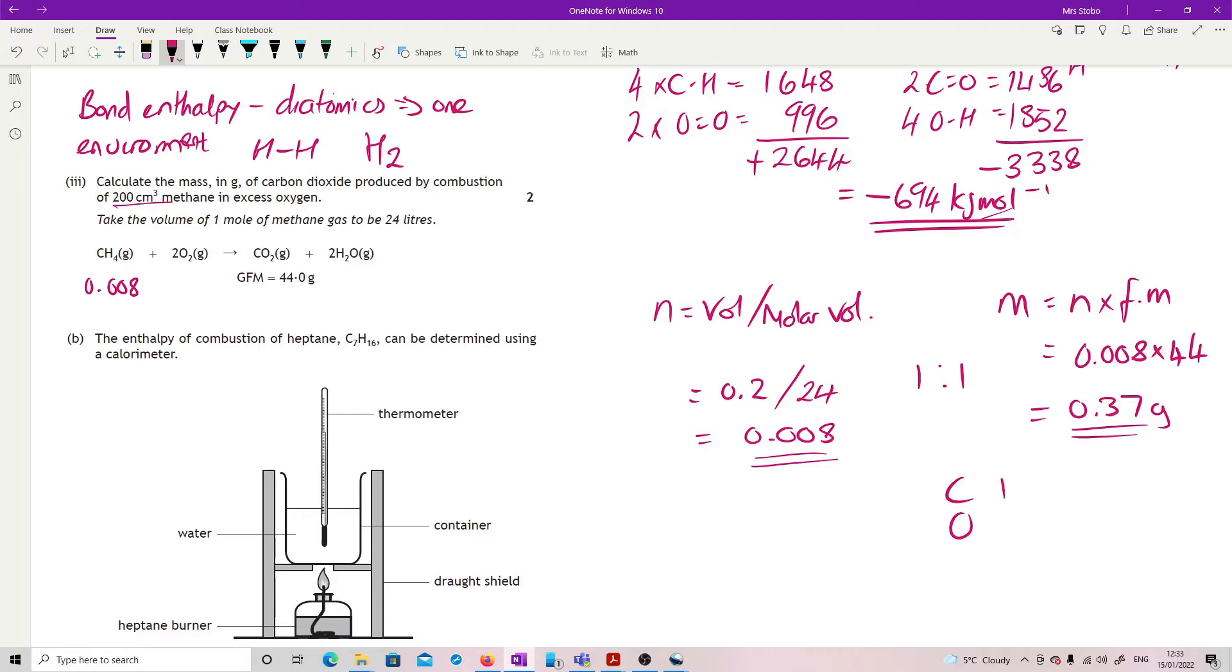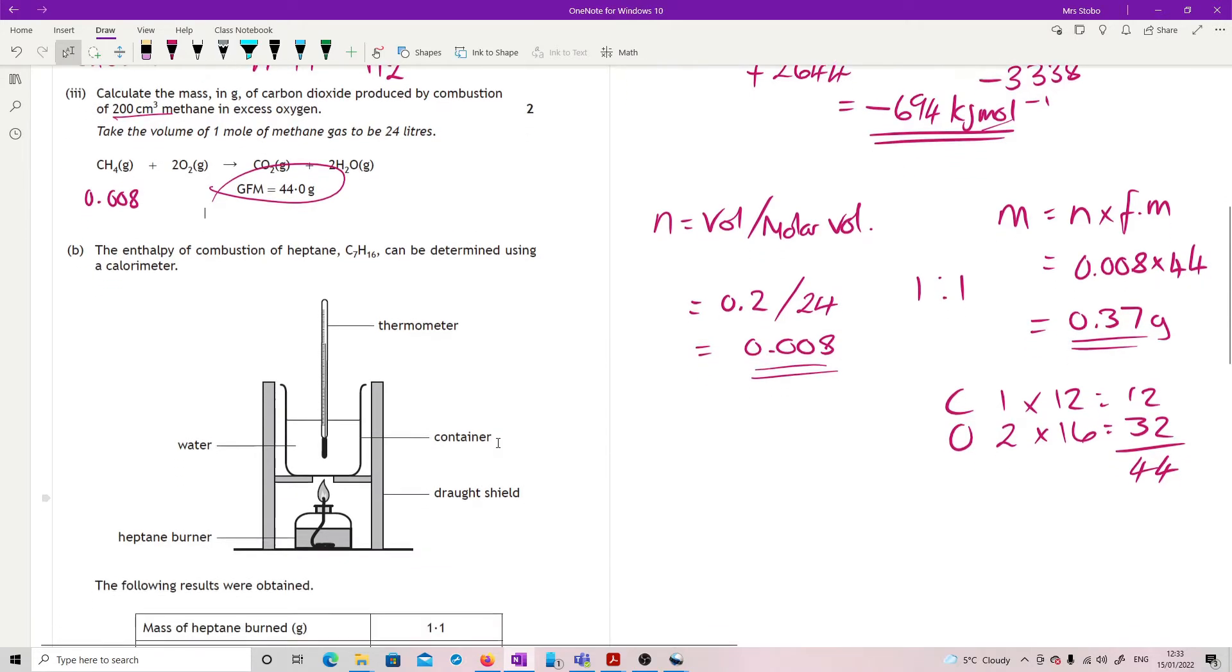Obviously, just to be clear, that's 1, that's 2, 12, and 16, so that's 12 and 32, giving you your 44 for your formula mass of carbon dioxide. In fact, you're also given it over here. Just didn't notice that one. But I would expect you to be able to know that you do it so often.